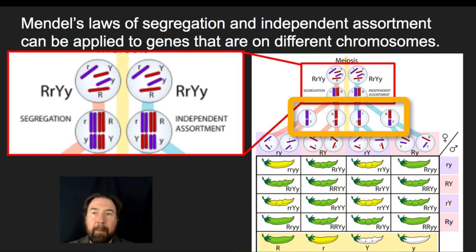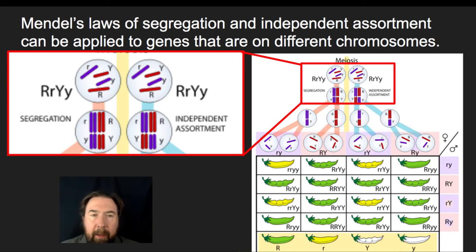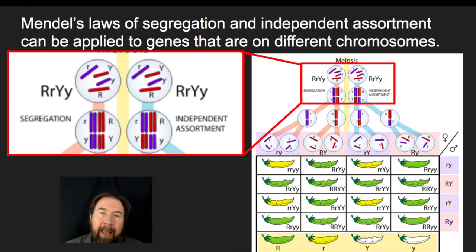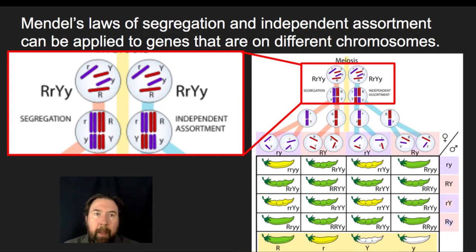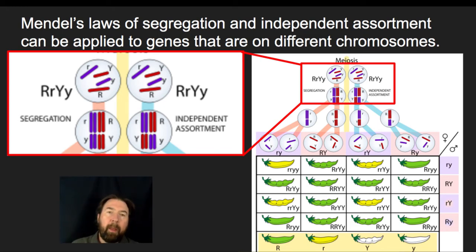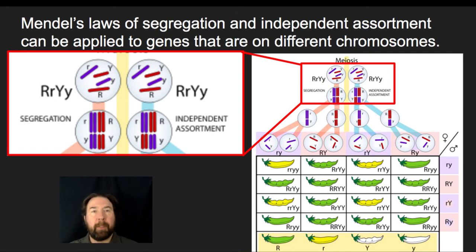Any one of those four combinations can be passed on, leading to enormous diversity in the possible gametes passed to the next generation. The laws are really true when alleles are on separate chromosomes. If big R and big Y were placed close together on the same chromosome, we may not see independent assortment — instead we would see gene linkage. Gene linkage is an exception to Mendel's law, as is a failure of chromosomes to segregate during meiosis leading to trisomy.